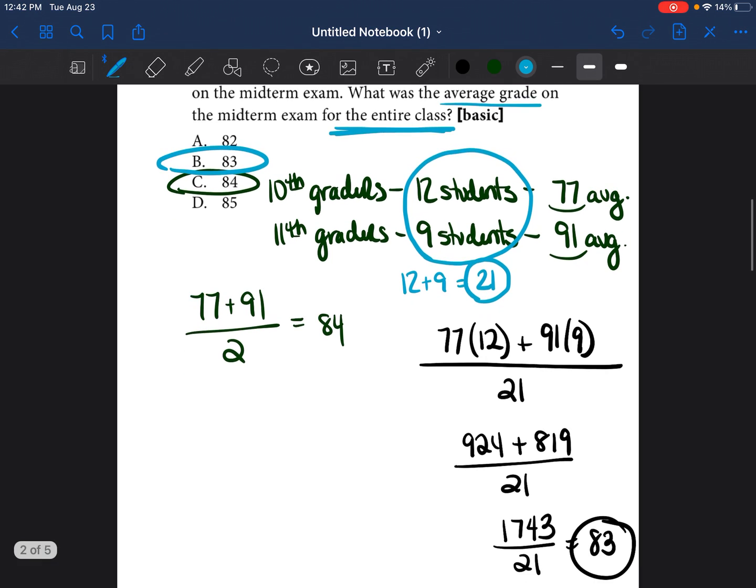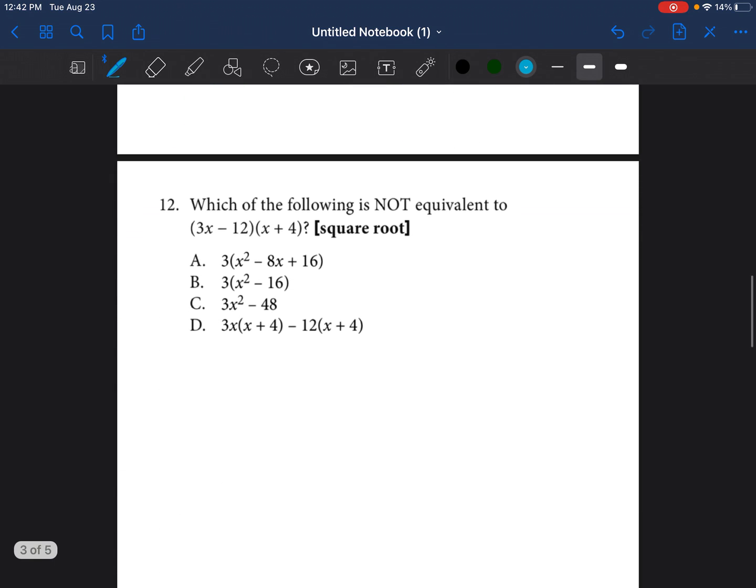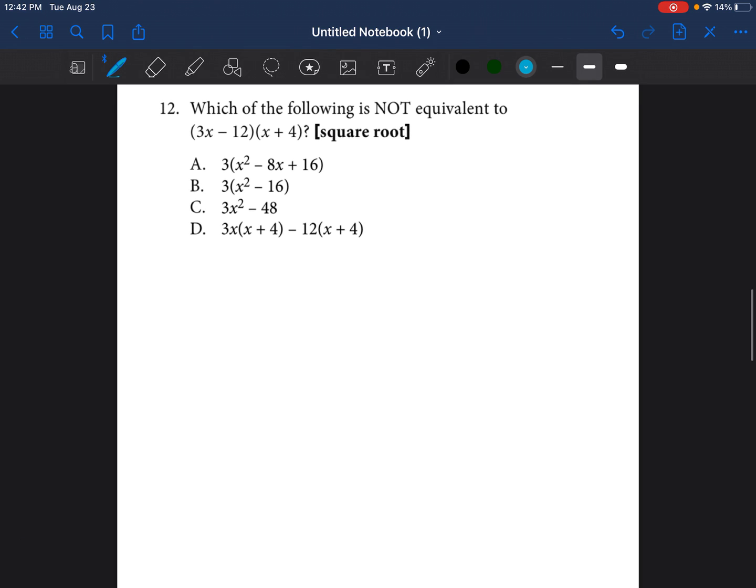All right. So if you have any questions, please let me know in the comments below. But we are going to continue on to our next problem. So question number 12 says, which of the following is not equivalent to 3x minus 12 times x plus 4?